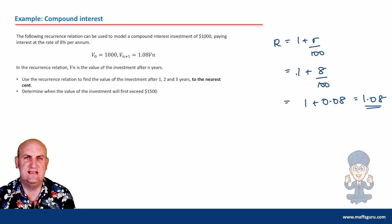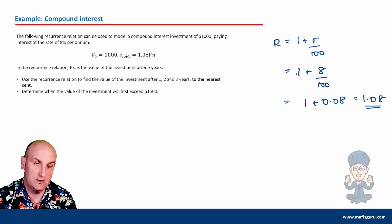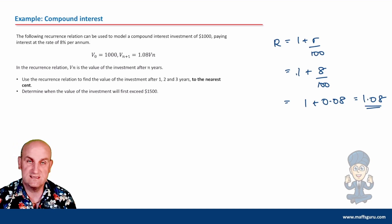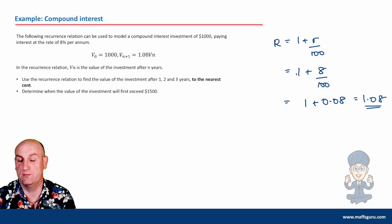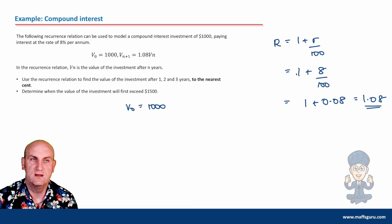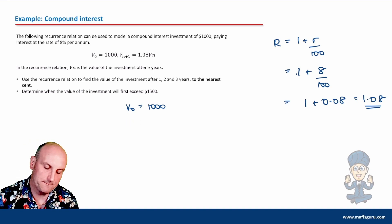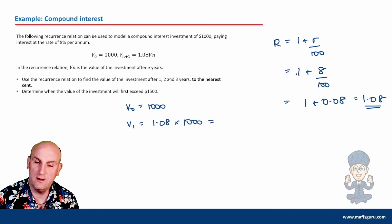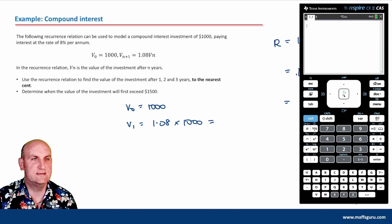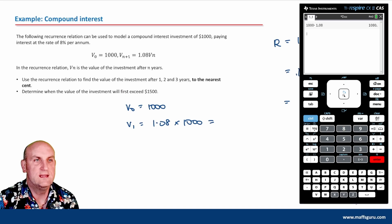V₀ is $1,000. V₁ is given by 1.08 times $1,000. Let's fire up the calculator — 1,000 times 1.08 gives me $1,080. V₂ is 1.08 times $1,080, which gives me $1,166.40 — remember money always has two decimal places, so that's 40 cents. V₃ is 1.08 times $1,166.40, which gives me $1,259.71.